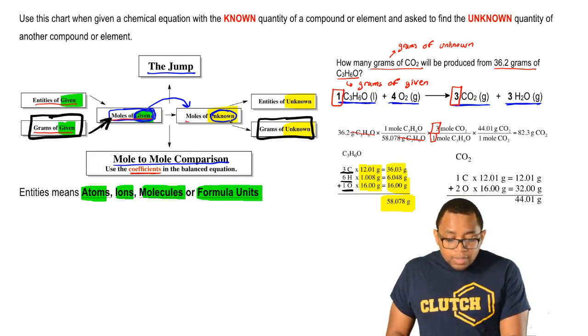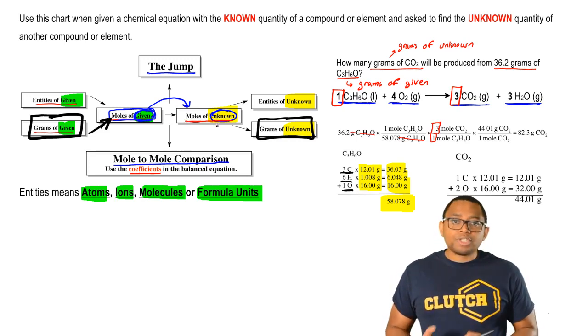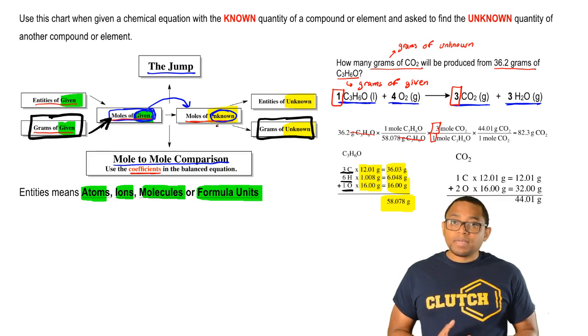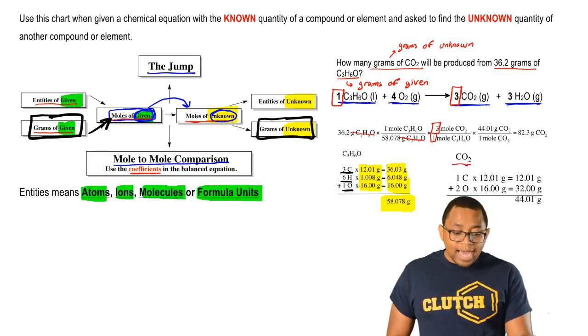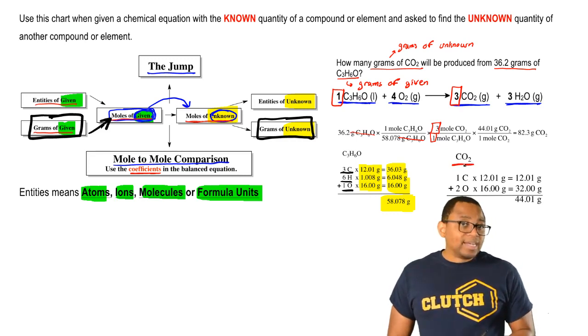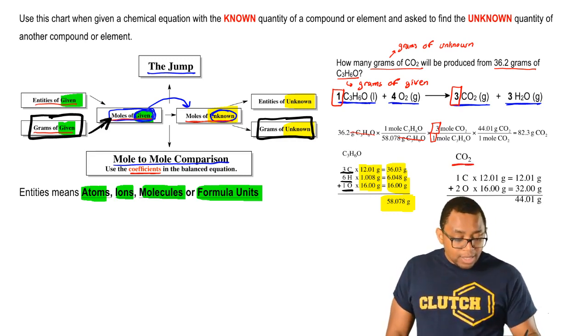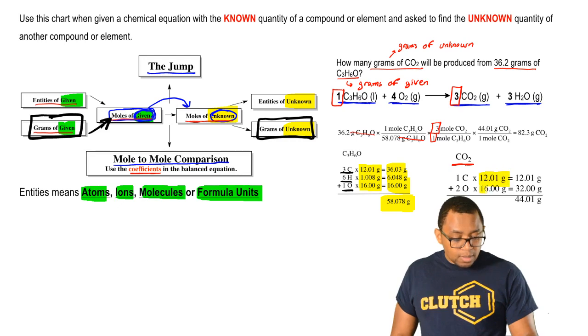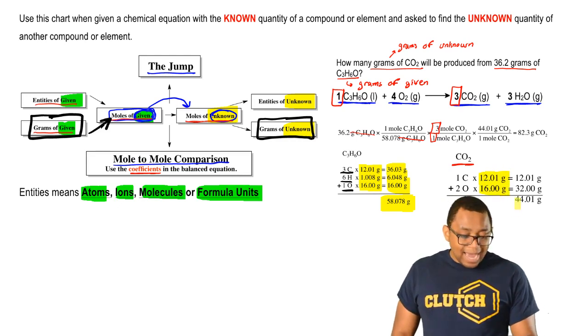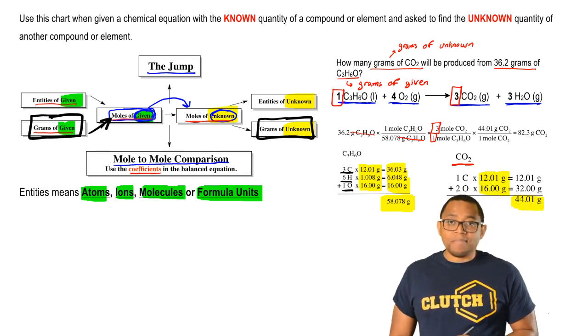Finally, we're here at moles of unknown. The last step, we're just going to change moles of unknown to grams of unknown. Again, we use the molecular mass of the compound. Carbon dioxide has in it one carbon and two oxygens. Getting their masses from the periodic table, multiplying, and then adding them together gives us our total mass of carbon dioxide.